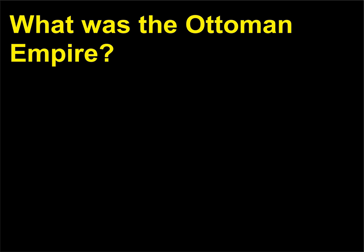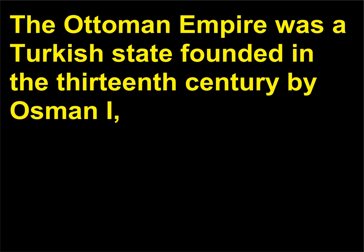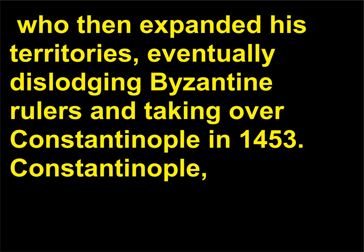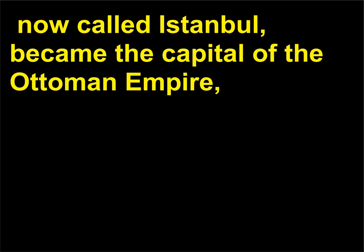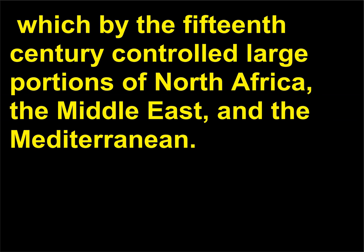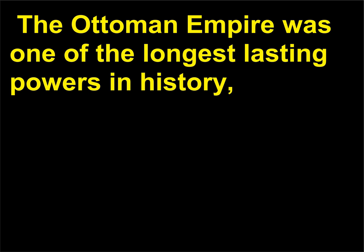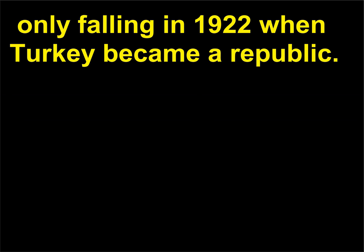What was the Ottoman Empire? The Ottoman Empire was a Turkish state founded in the 13th century by Osman, who then expanded his territories, eventually dislodging Byzantine rulers and taking over Constantinople in 1453. Constantinople — now called Istanbul — became the capital of the Ottoman Empire, which by the 15th century controlled large portions of North Africa, the Middle East, and the Mediterranean. The Ottoman Empire was one of the longest-lasting powers in history, only falling in 1922 when Turkey became a republic.